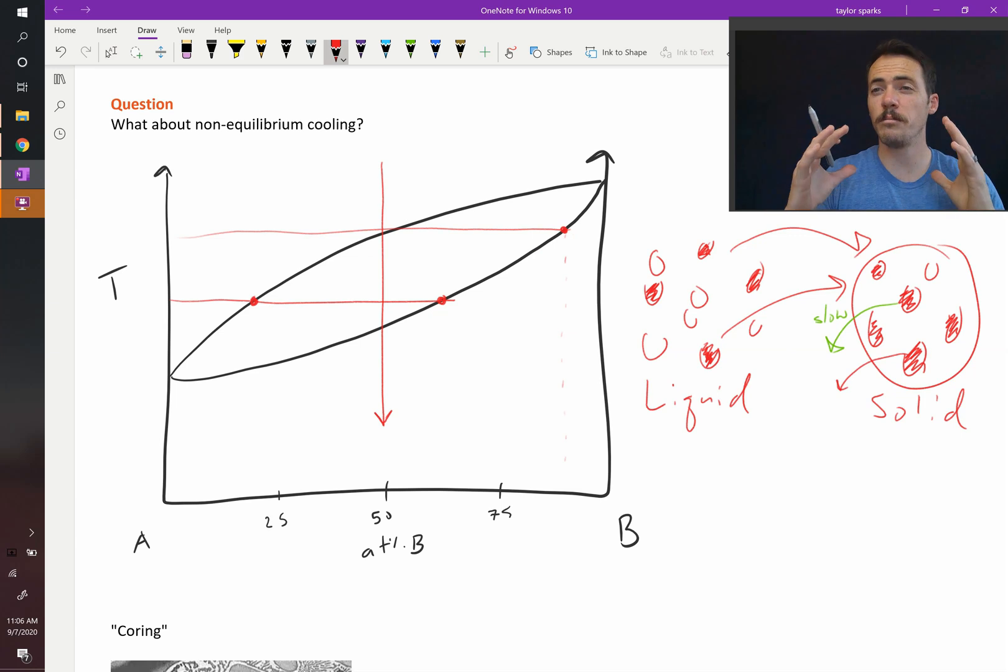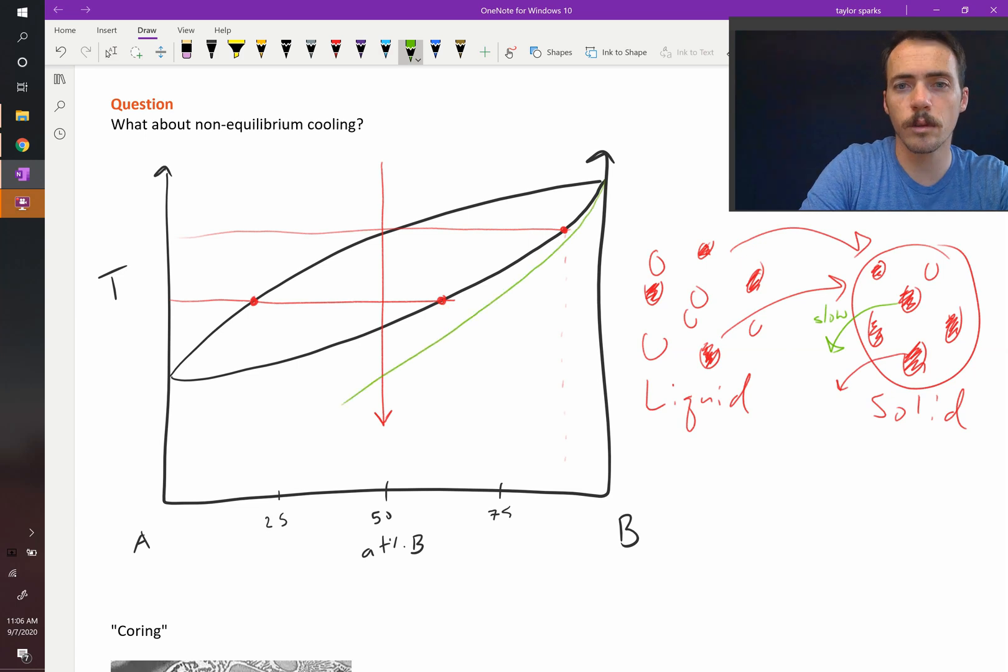Well, what if your solid is kind of big and diffusion is slow? Then you start to get this scenario where you don't get thermodynamic cooling, so the new line that it follows under non-equilibrium cooling might look something like that, where this is the actual composition you get at that temperature. You expect it to be here, but it's actually right there.